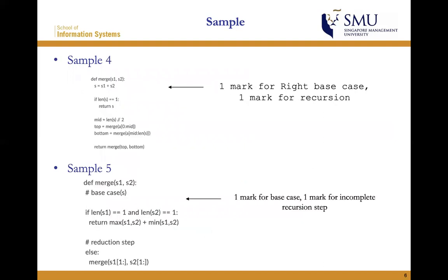In sample four, I will give one mark for the correct base case because it has a return, and one mark for the recursion because it calls the merge function and returns the merge function in the reduction step. Sample five is also one mark for the base case and one mark for the incomplete recursion step.